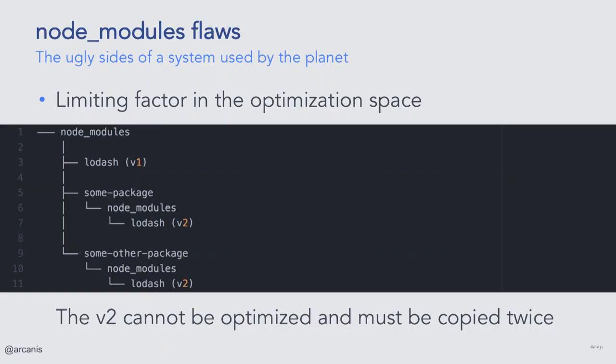On top of this, the way node_modules work makes it impossible to fully optimize a dependency tree. As you can see in the slide, there is a classic case where a package cannot be optimized into a single one because of path conflicts. Because of this, not only will the package be copied twice on disk, but Node itself will also instantiate it twice, which is not very efficient.